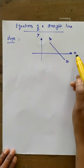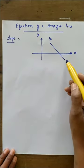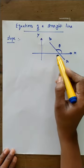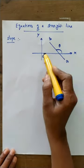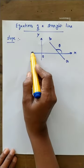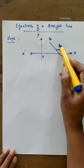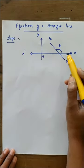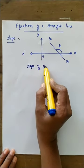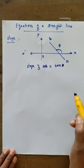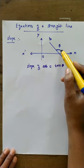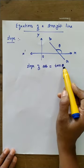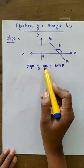In the last video we studied the x-axis and y-axis in detail. This is the angle between the straight line AB and the positive direction of the x-axis. The slope of line AB is the tangent of that angle theta — nothing but tan θ.